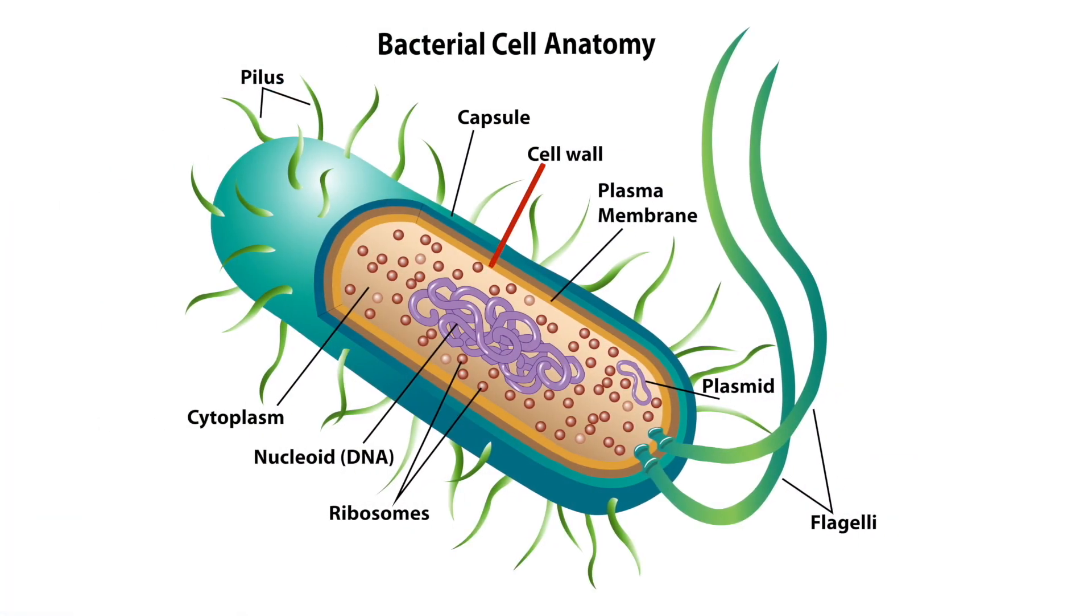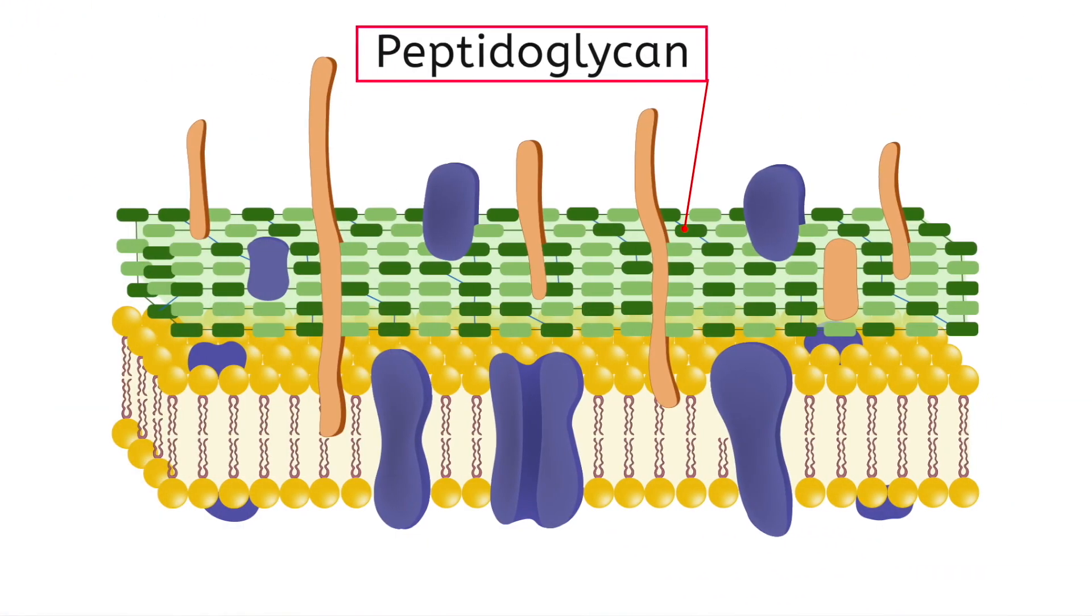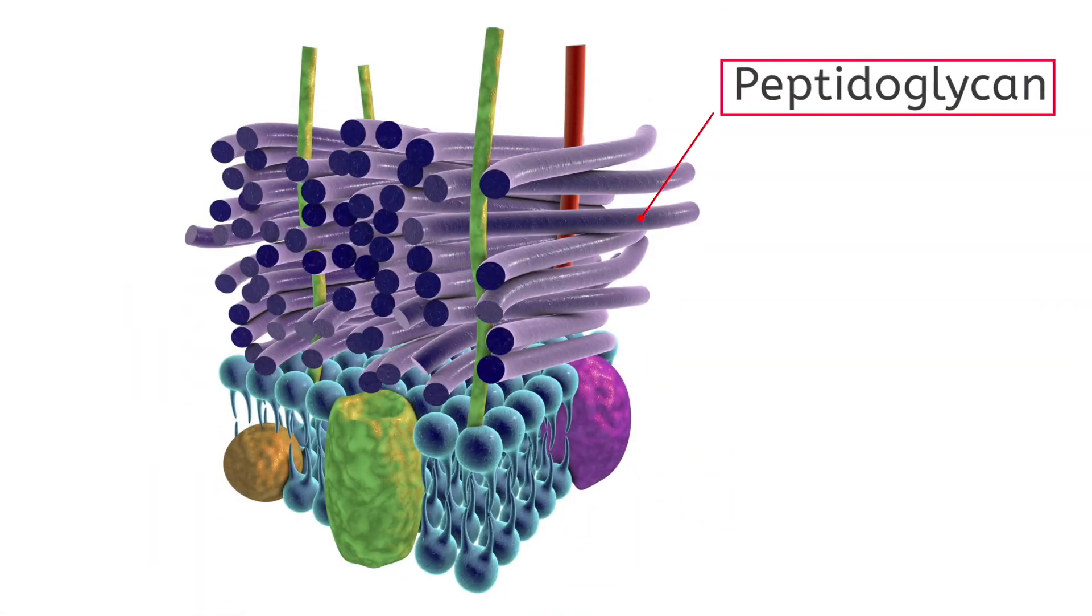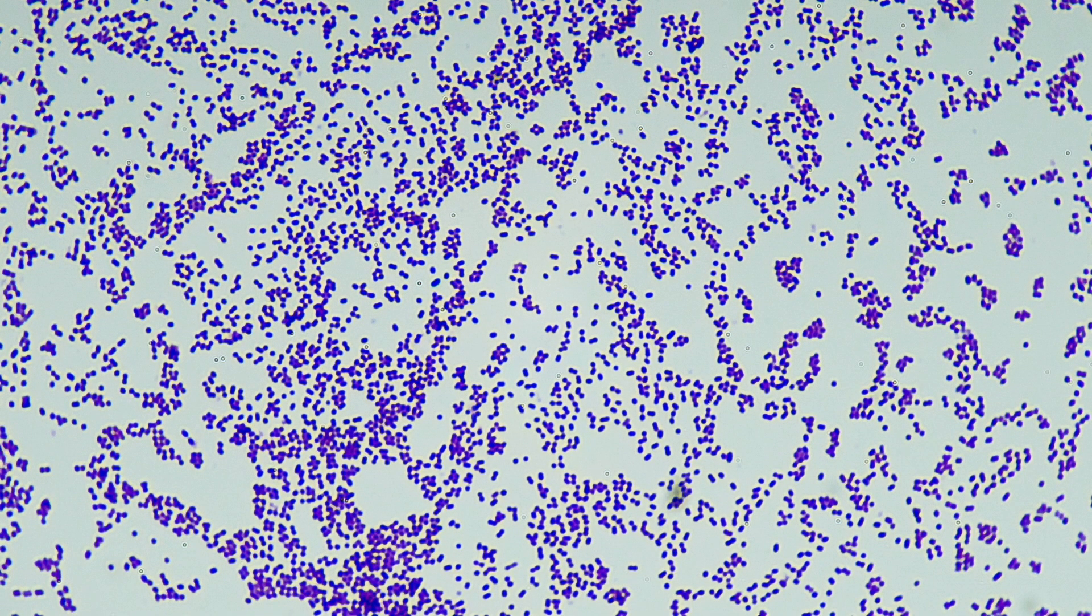Bacteria cells have at least some peptidoglycan in their cell walls. Peptidoglycan is a large sugar molecule with amino acids embedded in it. Cells with a thick layer of peptidoglycan, such as this one, absorb the purple dye from Gram staining very well and look purple under the microscope. These are called Gram positive bacteria.